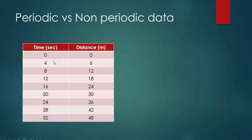In the distance column we also have a constant difference of 6 between consecutive values, so the distance data is also periodic. It is not necessary that the data in both columns be periodic simultaneously — it is entirely possible that data in the time column is periodic but data in the distance column is non-periodic.